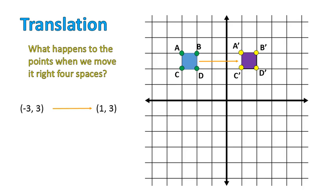So let's look at point A. A is the point negative 3, positive 3, and it becomes A prime, which is positive 1, positive 3. Notice the change there. Let's go to the point negative 3, positive 2. That's the point C, and it becomes positive 1, positive 2. The point B, negative 2, positive 3, becomes B prime, which is positive 2, positive 3. And then the point D, negative 2, negative 2, turns into positive 2, positive 2.